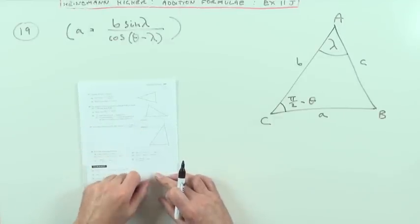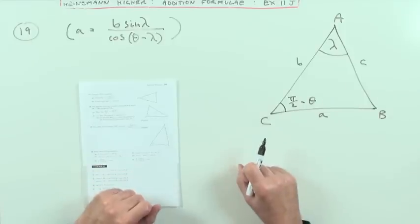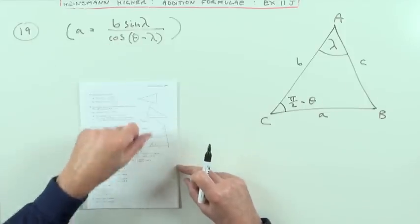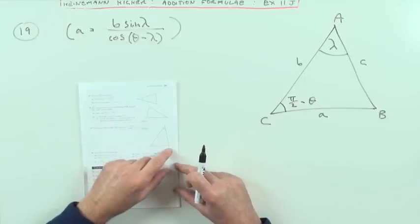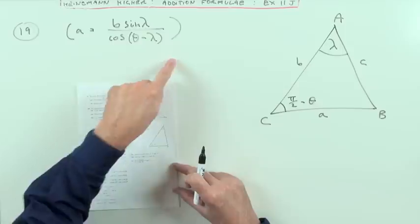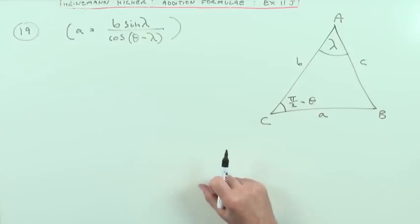Number 19, a former higher question. A scaling triangle and that configuration makes it look like you're using the sine rule. Simply says, prove this for that triangle.